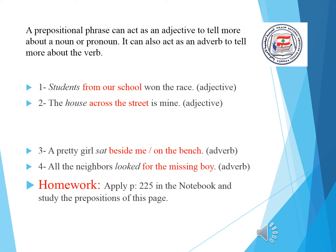Here are some examples. 1. 'Students from our school won the race.' From our school is a prepositional phrase that acts as an adjective to modify the noun students. 2. 'The house across the street is mine.' Across the street is a prepositional phrase that acts as an adjective to modify the noun house. 3. 'A pretty girl sat beside me on the bench.' Beside me and on the bench are two prepositional phrases that act as adverbs to modify the verb sat. 4. 'All the neighbors looked for the missing boy.' For the missing boy is a prepositional phrase that acts as an adverb to modify the verb looked.